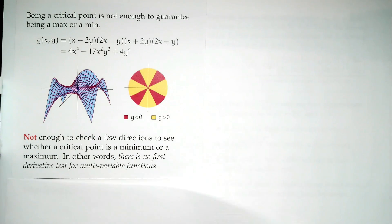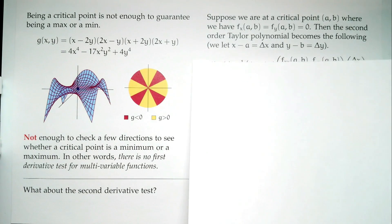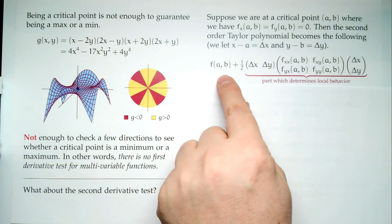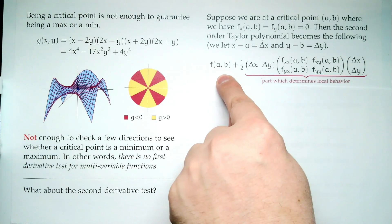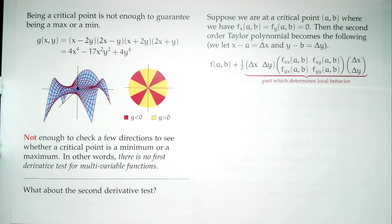That leaves us the second derivative test. If we're at a critical point where the gradient is zero and we look at the Taylor approximation, the first-order terms — f_x(a,b)(x-a) and f_y(a,b)(y-b) — vanish because they're zero. So the Taylor polynomial is just the constant term plus a quadratic piece, and that quadratic piece determines our local behavior.